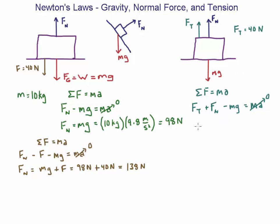If I solve this for the normal force, I'm going to get that the normal force is equal to the weight, but this time minus the force of tension, that's going to be 98 newtons minus 40 newtons, which is 58 newtons.